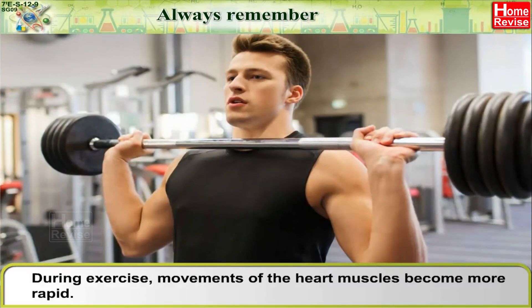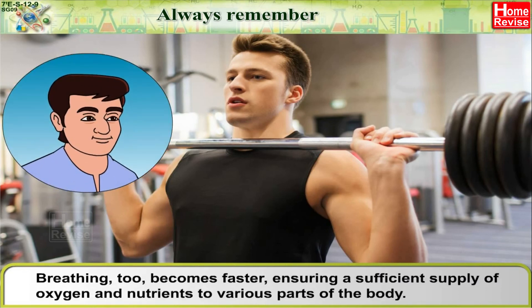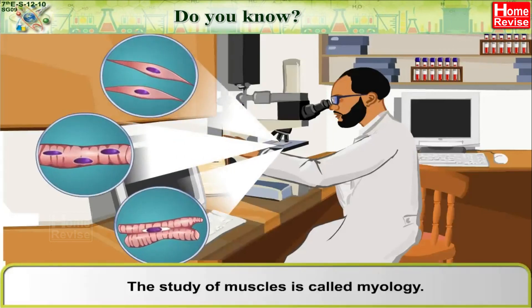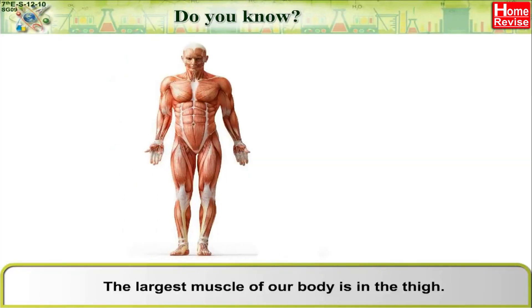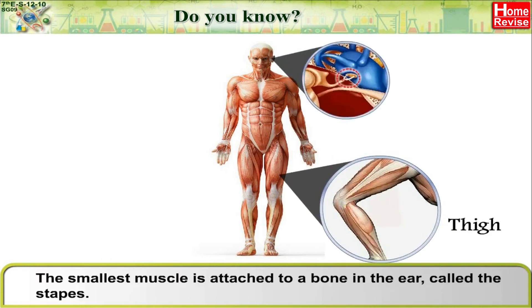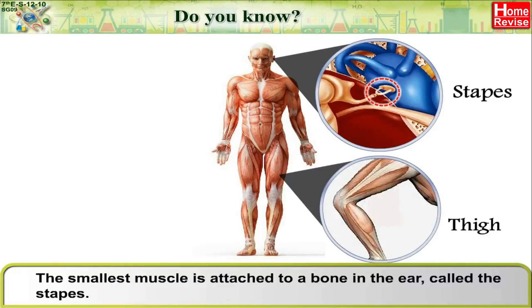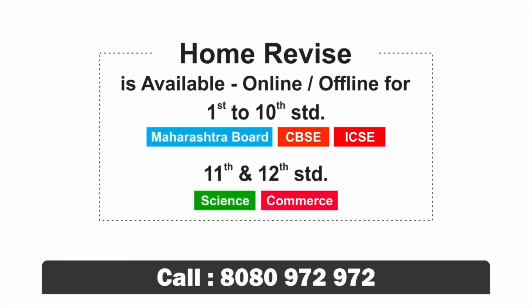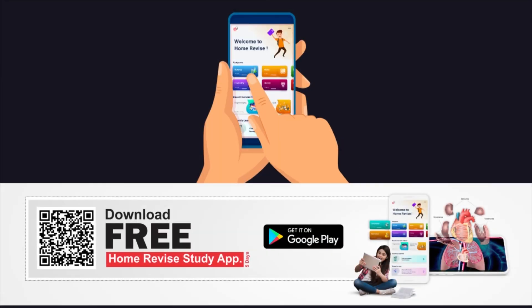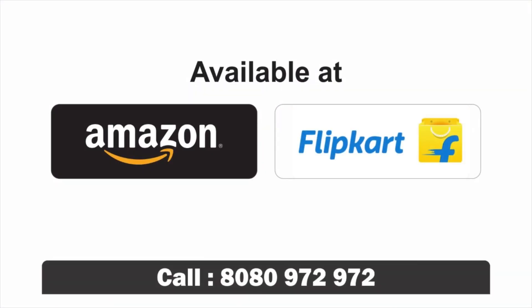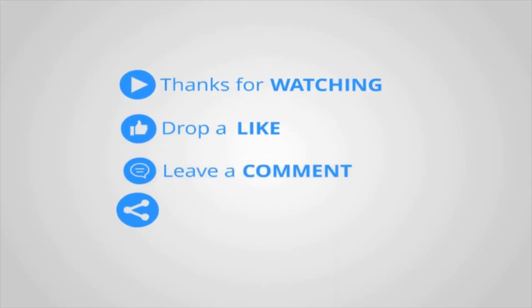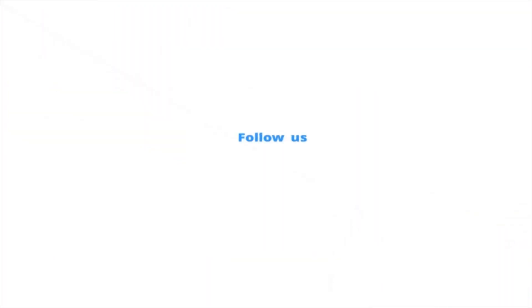During exercise, movements of the heart muscles become more rapid. Breathing too becomes faster, ensuring a sufficient supply of oxygen and nutrients to various parts of the body. The study of muscles is called myology. Contraction is the basic property of muscles. The largest muscle in our body is in the thigh. The smallest muscle is attached to a bone in the ear called the stapes.